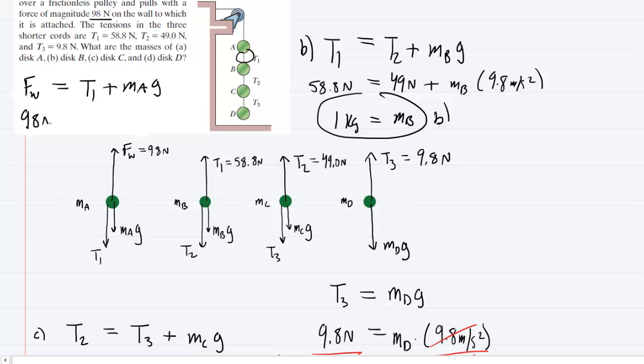We'll fill in the known values and then finally go ahead subtract 58.8 from both sides and then divide by 9.8 and you will get 4 kilograms, the mass of disk A and the correct answer to part A of the question. So now we know all the masses.